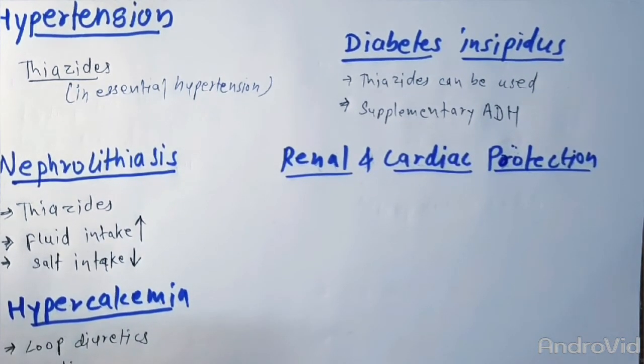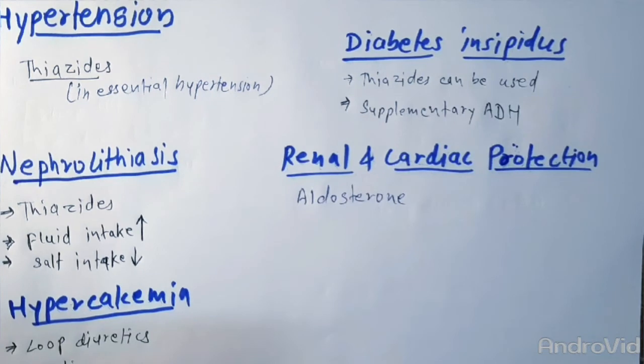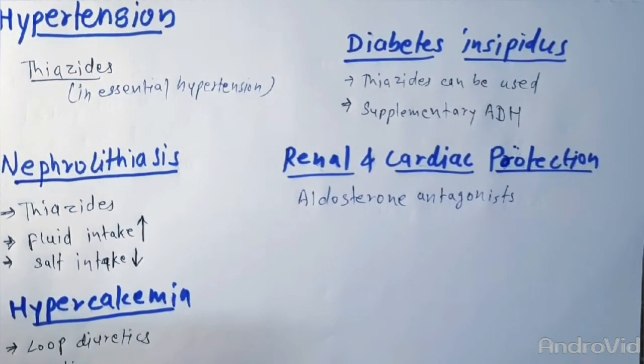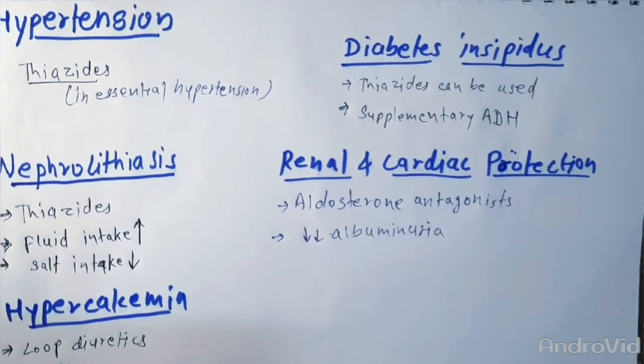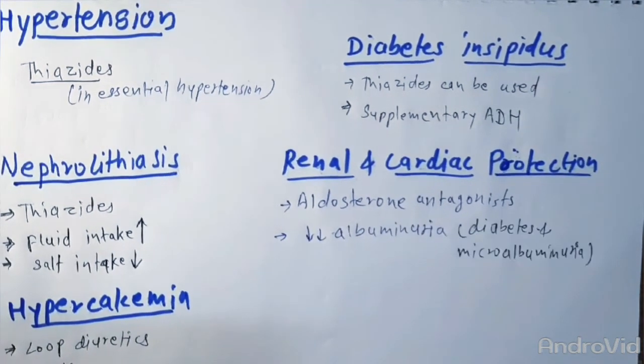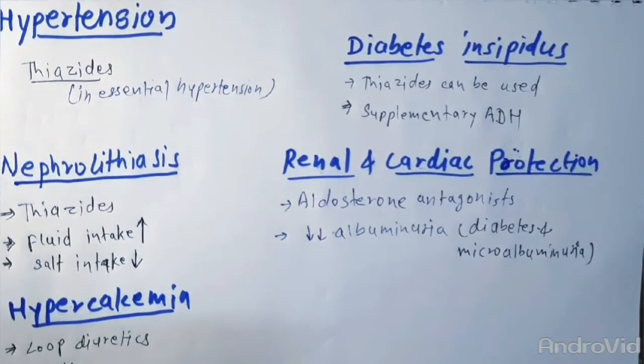Now let's talk about renal and cardiac protection. Aldosterone antagonists have been shown to be cardioprotective in patients with heart disease. They may exert an additional benefit in lowering albuminuria in patients with diabetes and microalbuminuria. So with this we have finished the last part of our discussion.